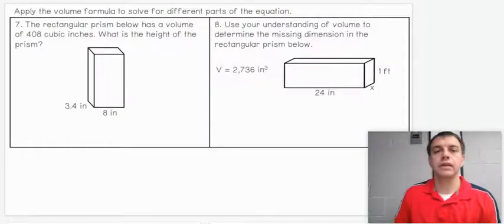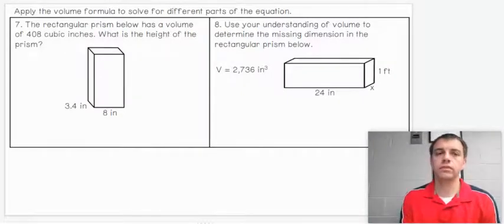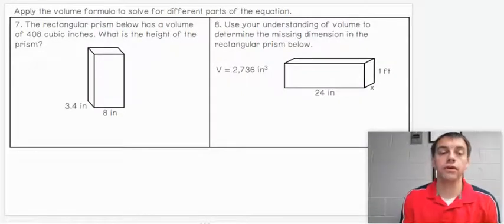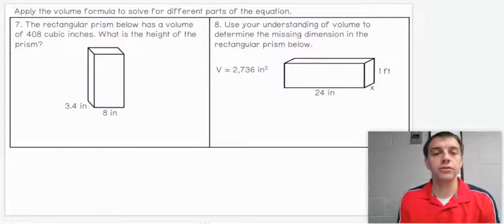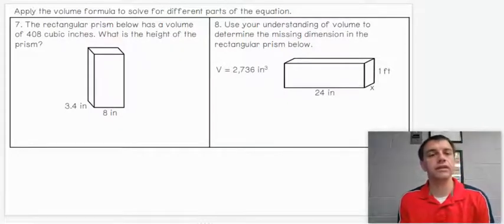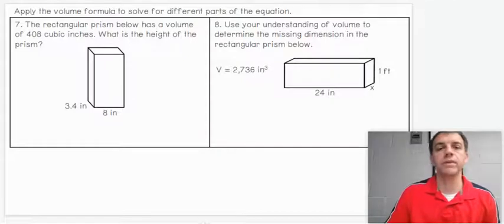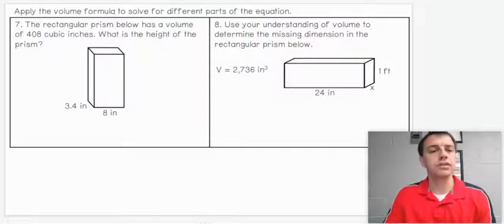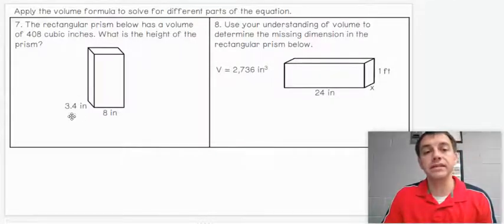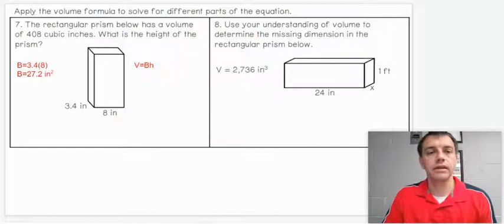Let's move on. Number seven. Now we're given a different number. We're given the total volume, 408 cubic inches. What is the height of the prism? We have to kind of work backwards on this. First off, I think it would be worth us finding the base area. We know that it is a rectangle as the base.